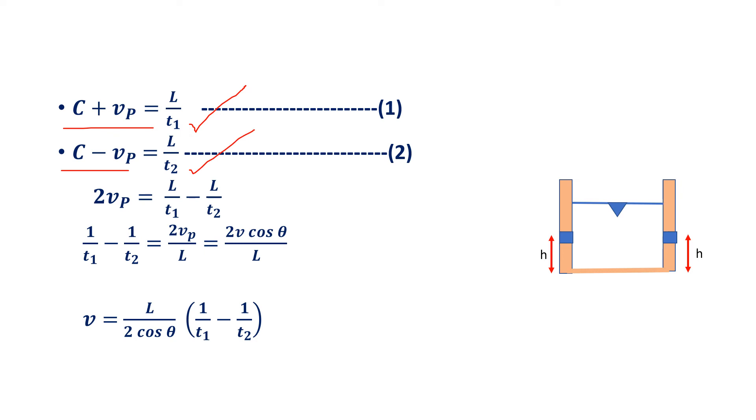Now we are subtracting equation 2 from equation 1. We will get twice of Vp equals to L by T1 minus L by T2. It can be written as 1 by T1 minus 1 by T2 equals to twice of Vp divided by L.